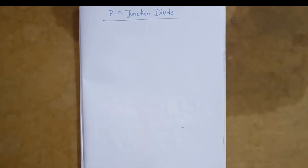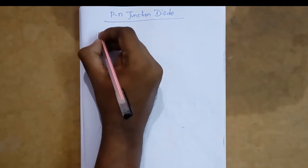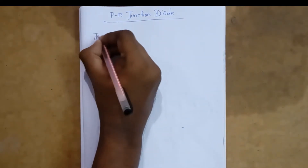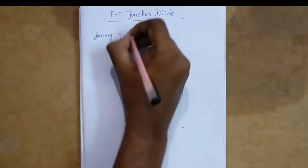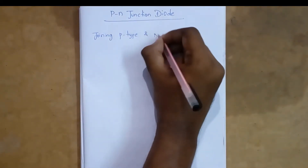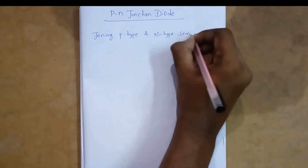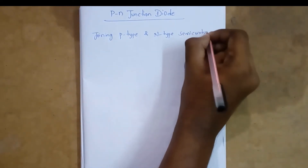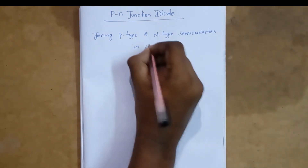Friends, now we discuss about PN junction diode. PN junction diode is formed by joining P-type and N-type semiconductors in close contact.